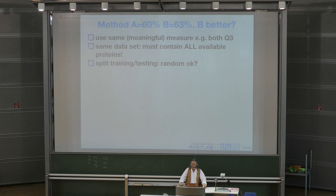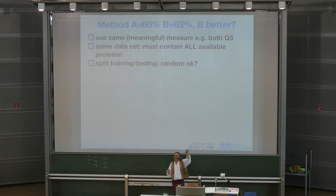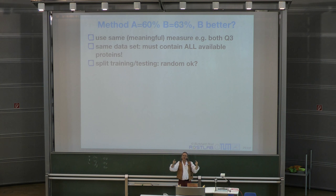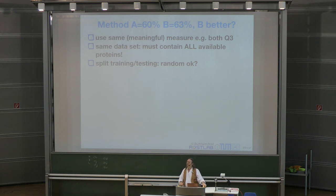That brings us to a different issue: is a random split between training and testing okay? In a two-fold cross-validation, I use one half of the data set for training and the other half for testing, then switch around. This way I compile a testing value for every single protein exactly once. But the question is: is random the right way to do this split?